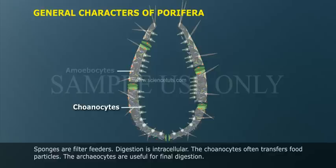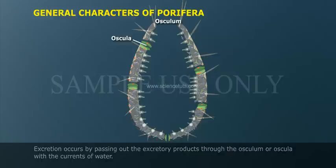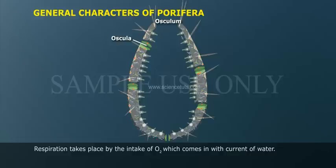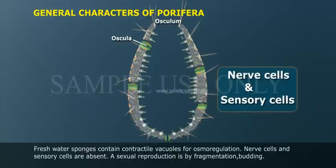The choanocytes often transfer food particles, and archaeocytes are responsible for final digestion. Excretion occurs by passing excretory products through the osculum with currents of water. Respiration takes place by the intake of oxygen which comes in with the current of water. Fresh water sponges contain contractile vacuoles for osmoregulation.